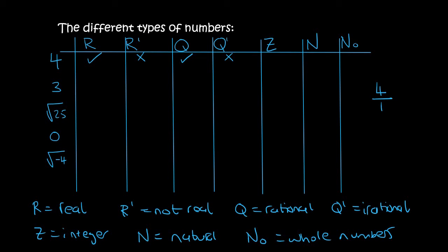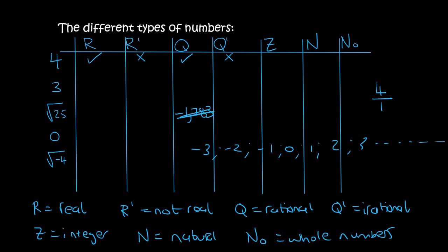Integers are numbers like minus 3, minus 2, minus 1, 0, 1, 2, 3 and so on. They can be negative and positive but they must be complete — they can't be numbers like minus 1.783. So the number 4 is an integer.